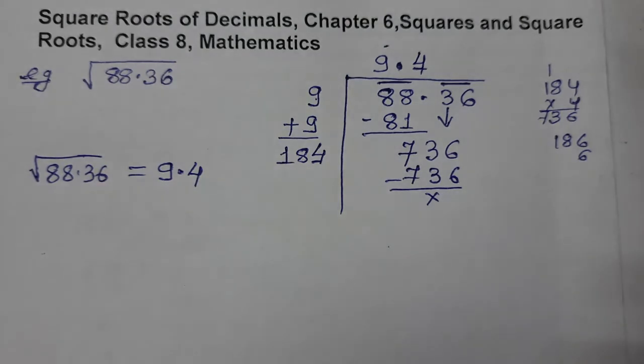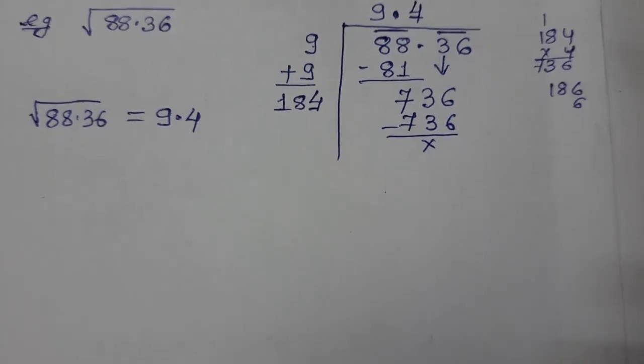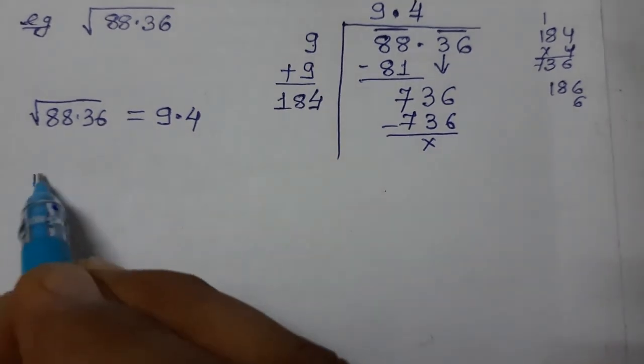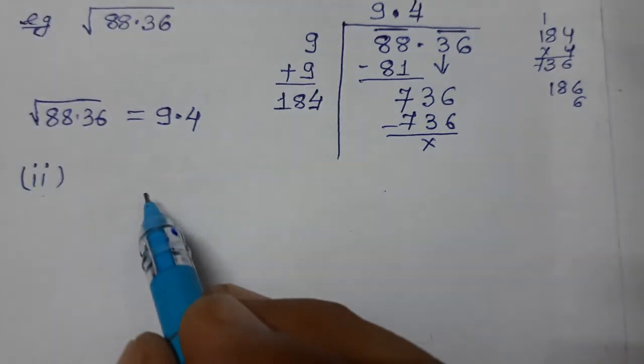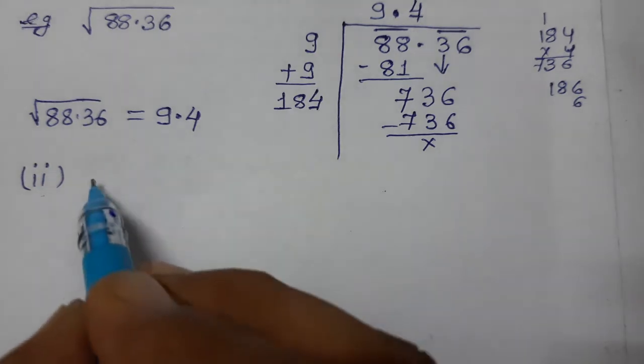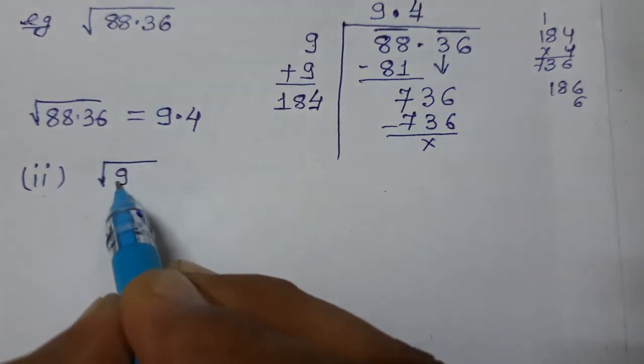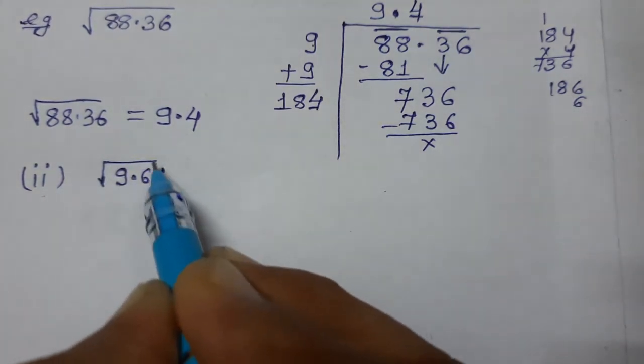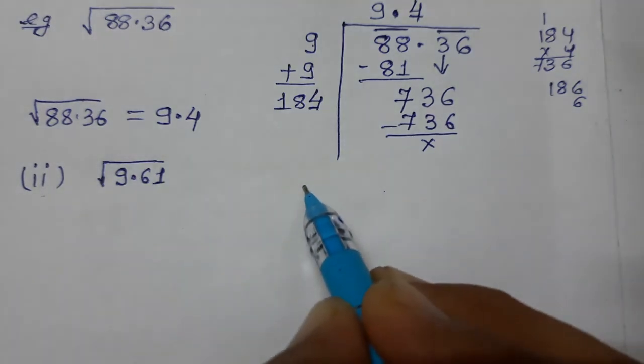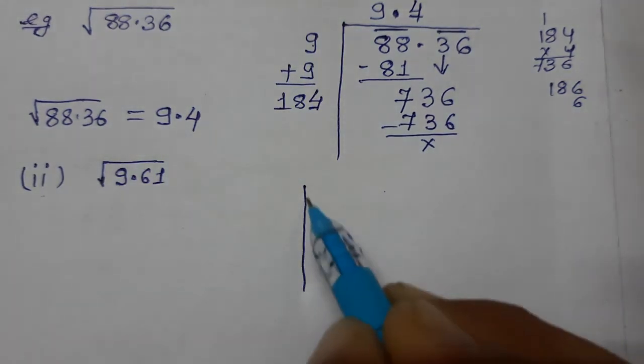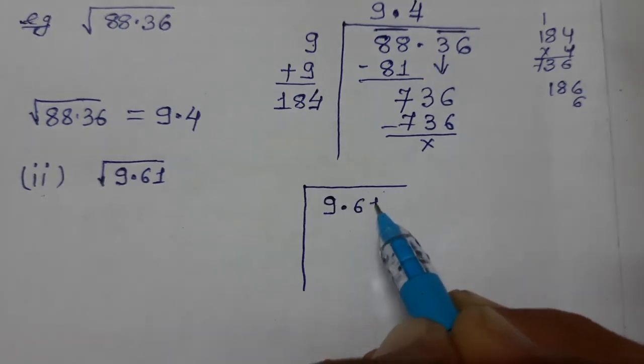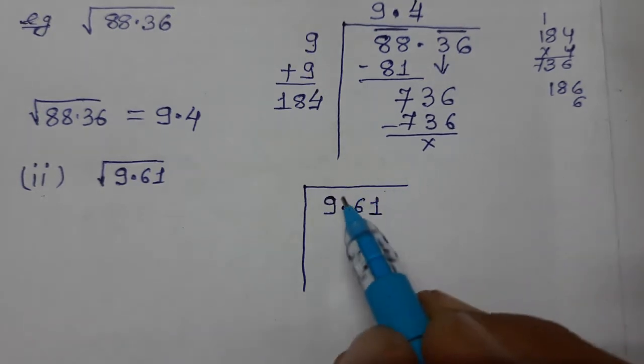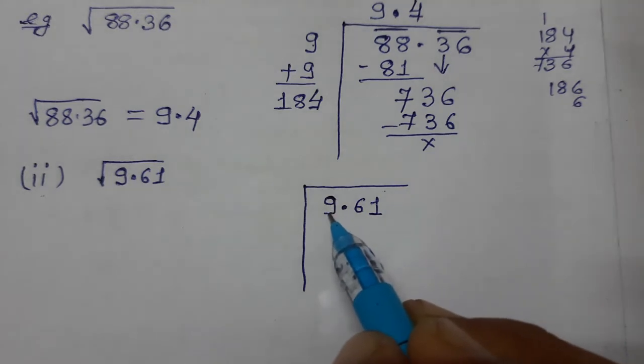Now let's take one more example. Suppose we need to find the square root of 9.61. So again, what we have to do? Again, first of all, you have to make the arrangement like this. Put the number inside, decimal number.